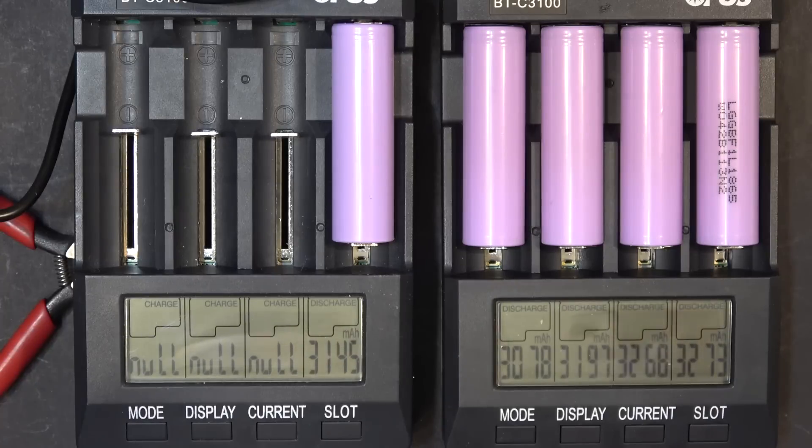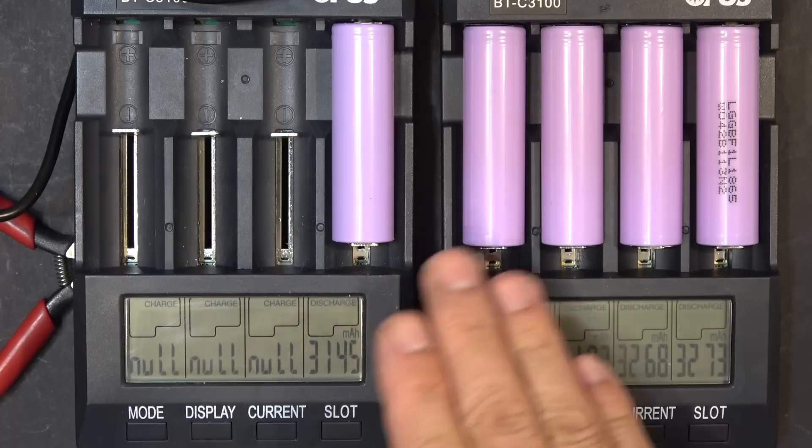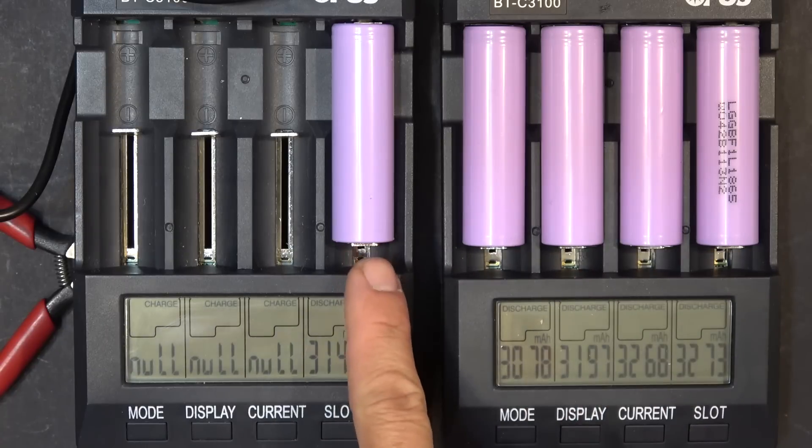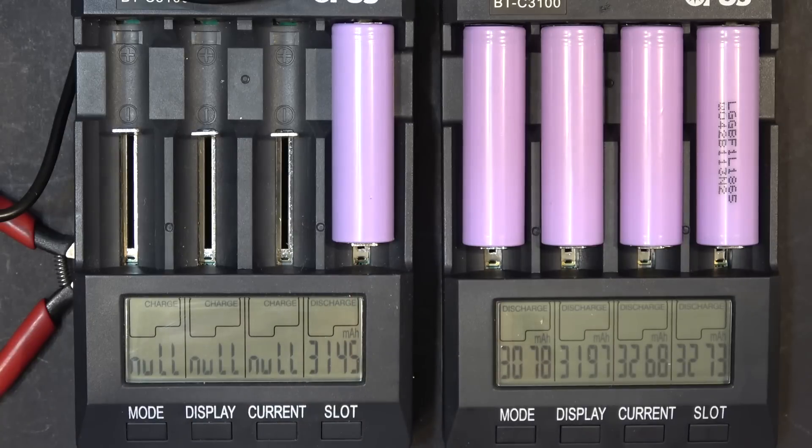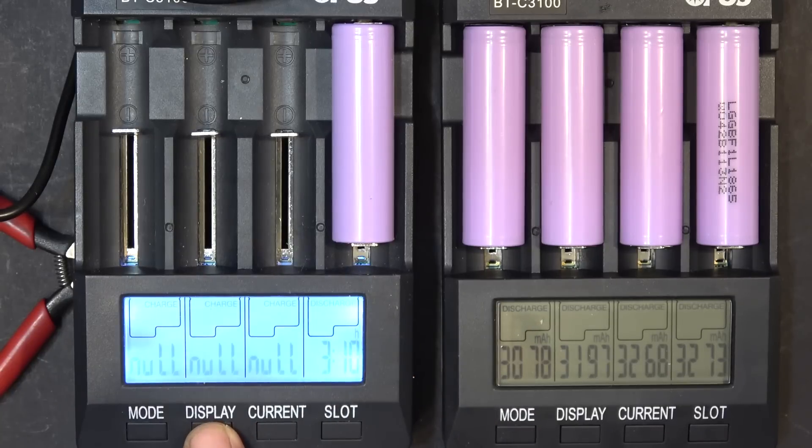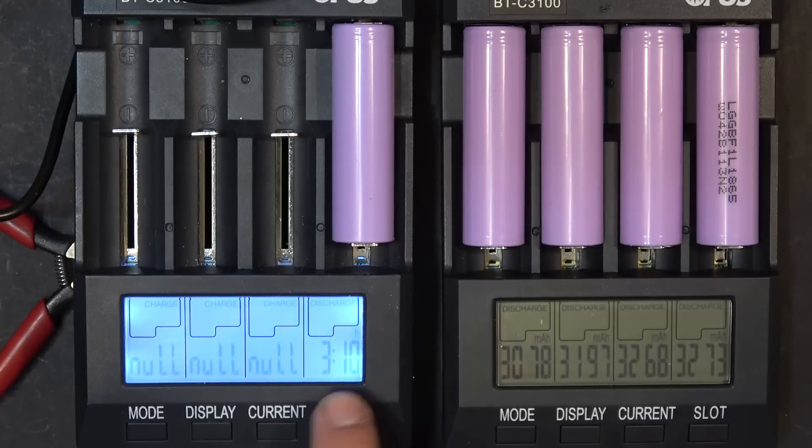All right, I am back, and it has been running for over 24 hours. Let's check out what we've got here. This one here I let it discharge at 1 amp, and the capacity total is 3145 mAh. This is rated at 3350 mAh, and that's a little bit less than the rated capacity. Let's see the rest of the data here. So it ran for 3 hours, 10 minutes.